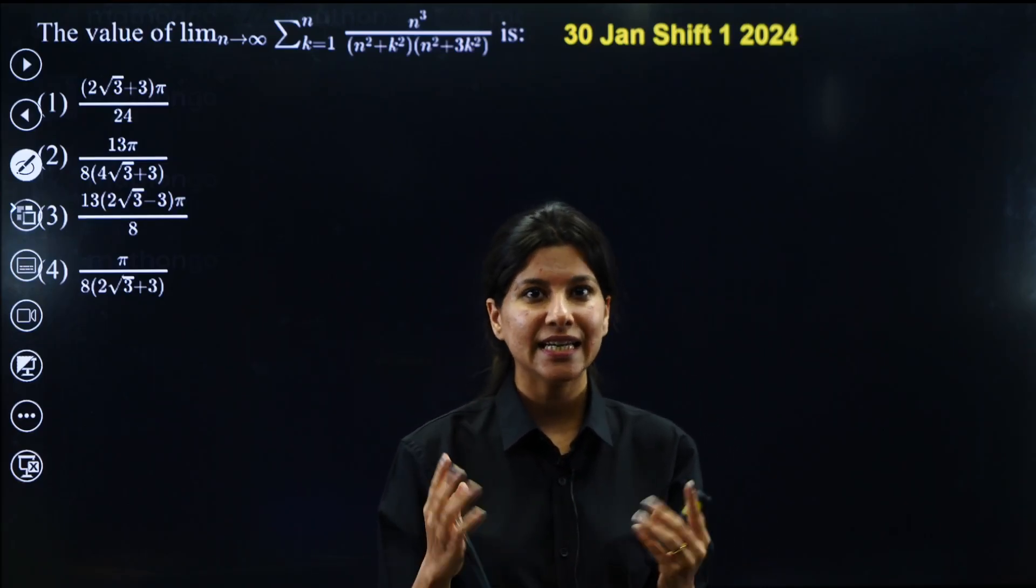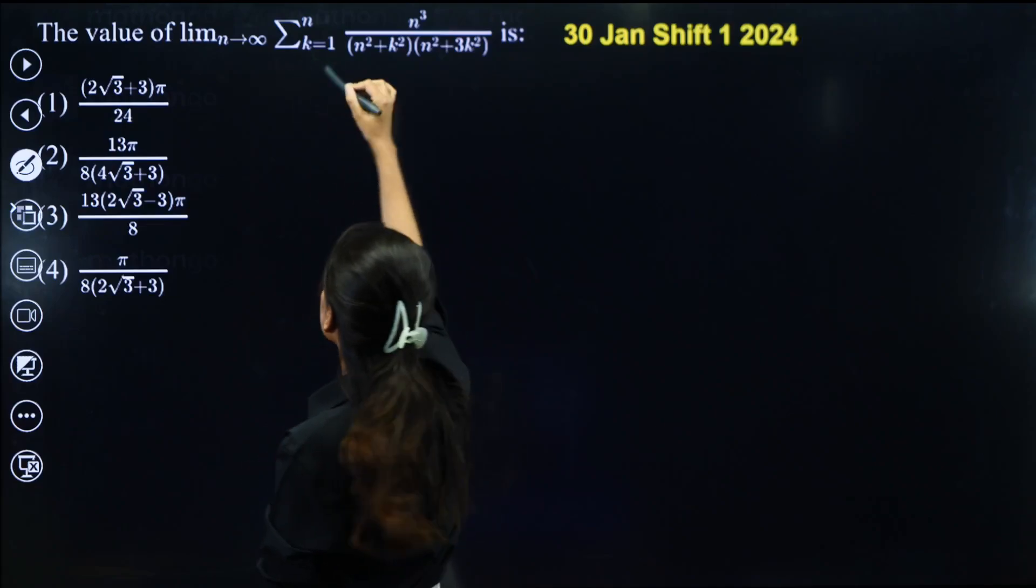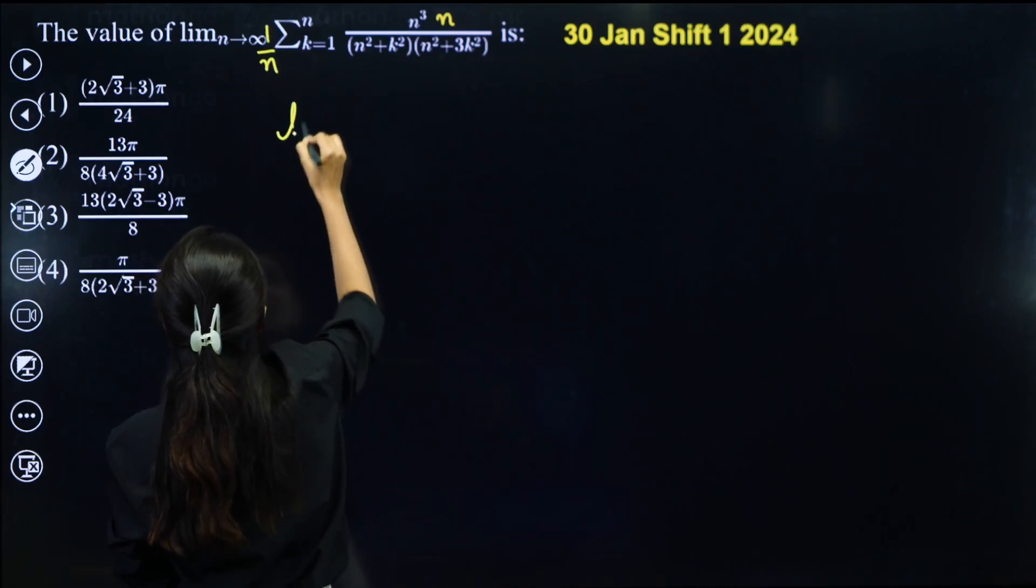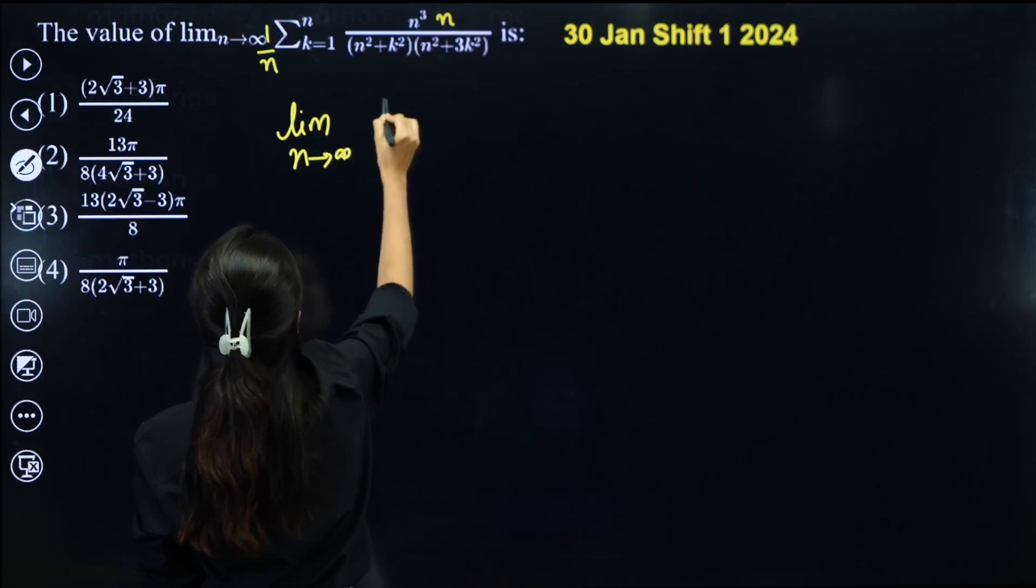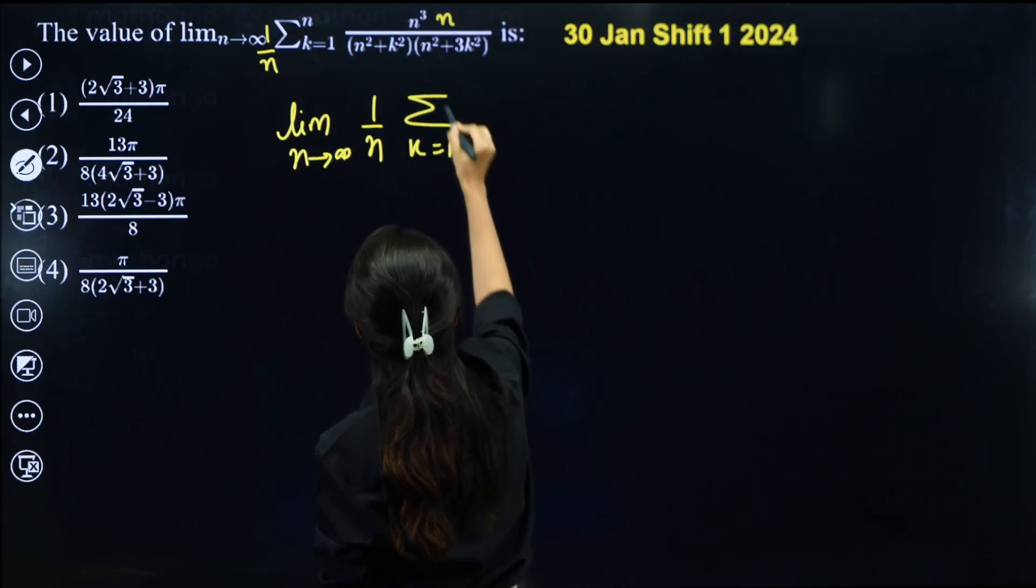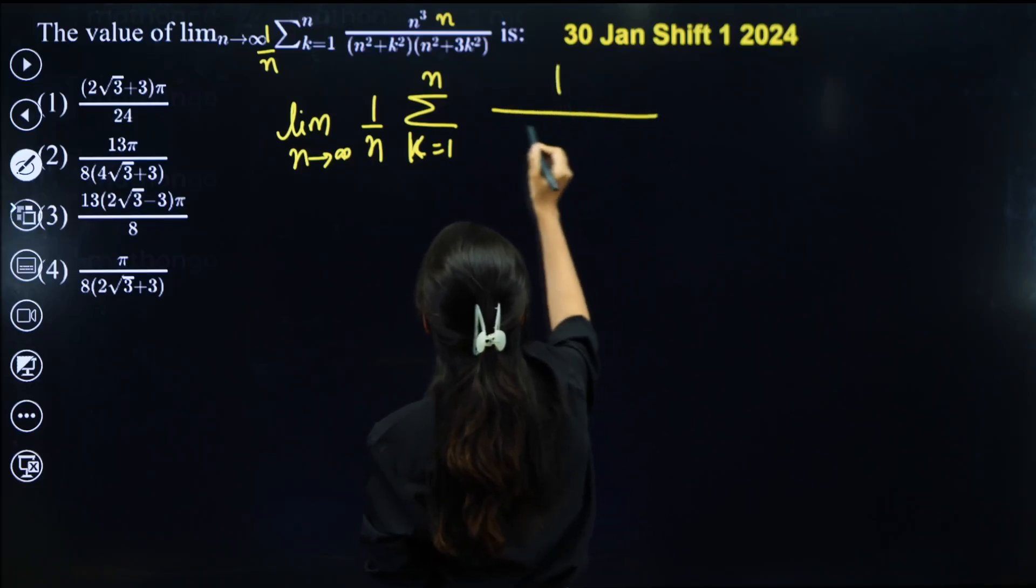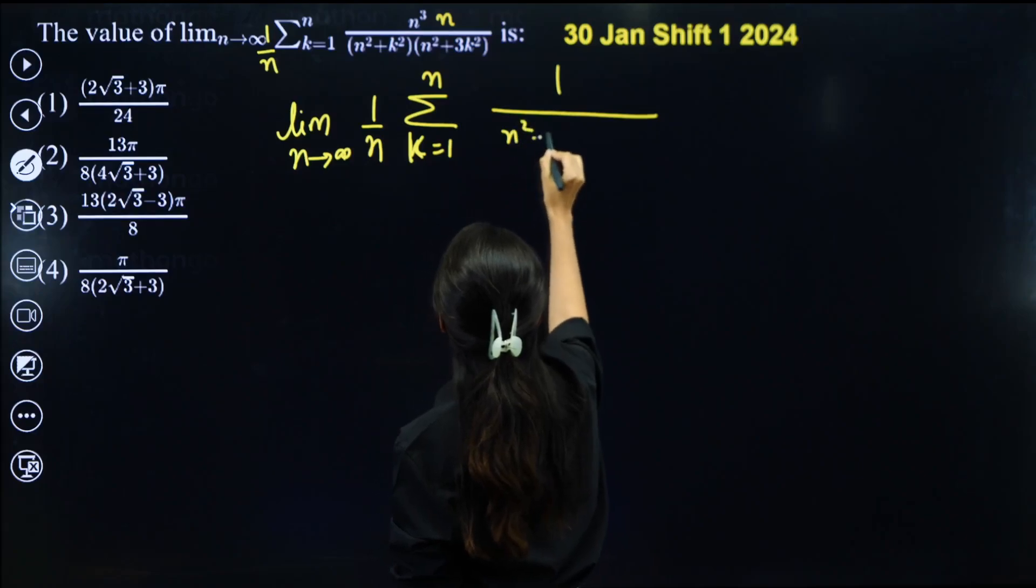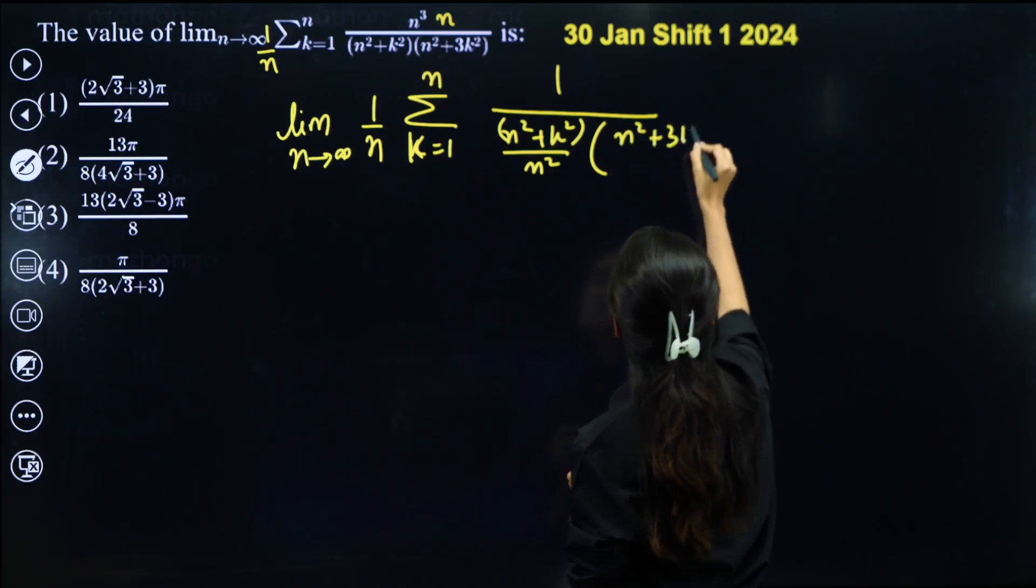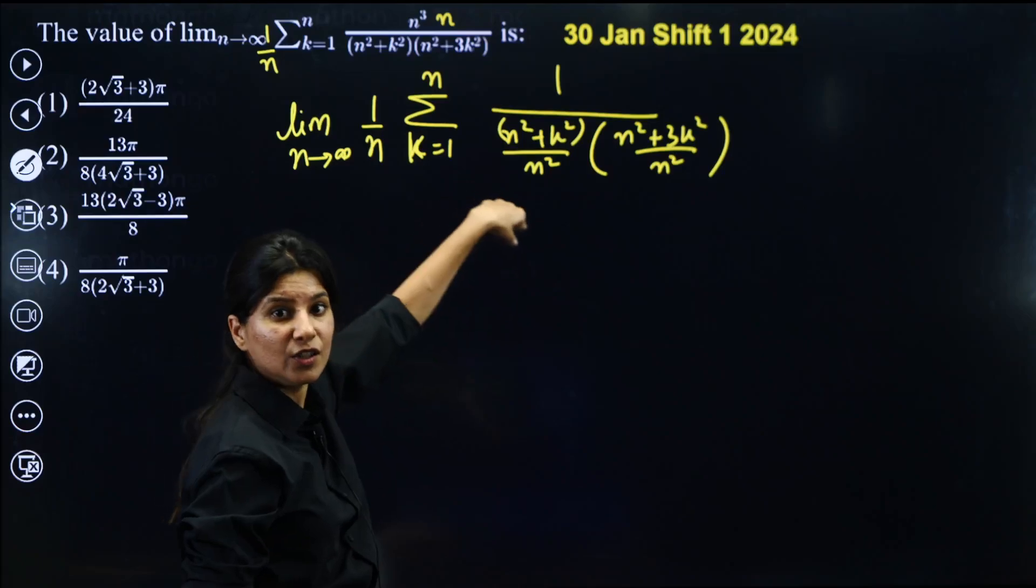That means we have to express in terms of definite integration. So first of all, I need N in the denominator. For that, let me just multiply N over here and divide N over here. So it will become limit N tend to infinity, 1 by N as discussed. Then sigma will be here. K equals 1 to N. And N raised to power 4. Now this N raised to power 4 can be divided over here and distributed. So N square will be here and another N square can be written over here.